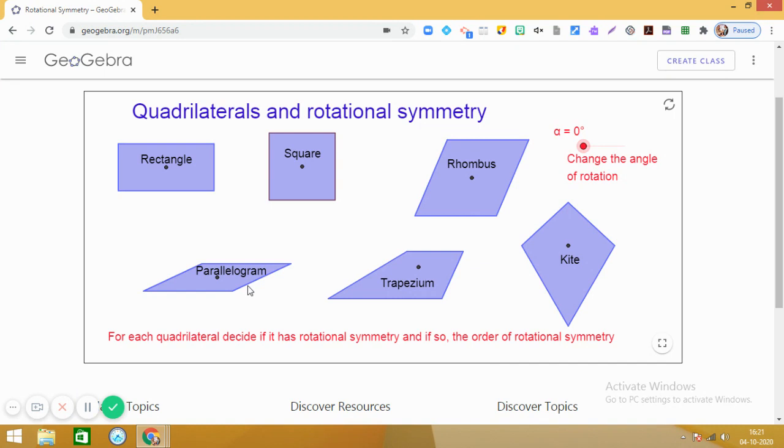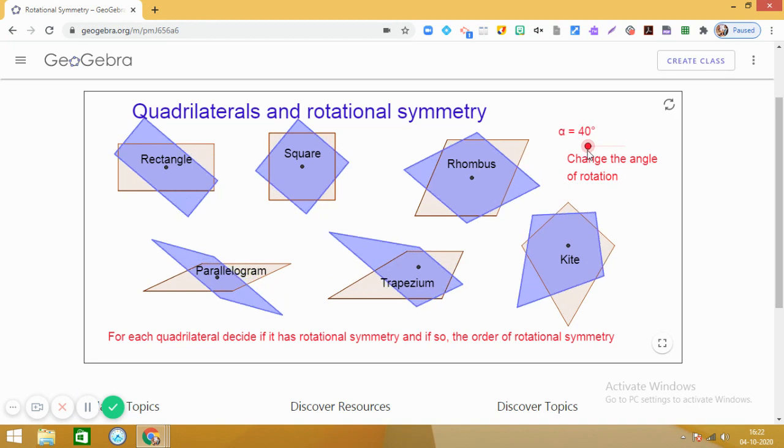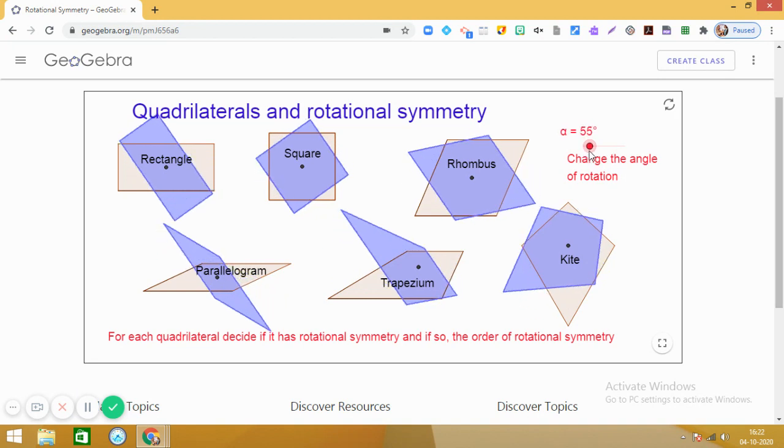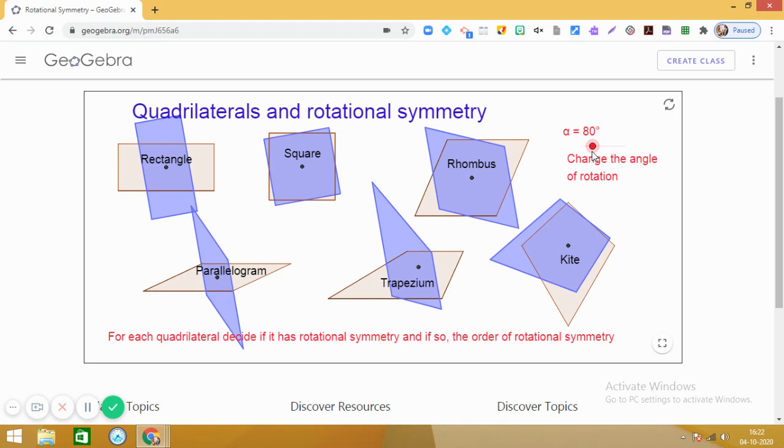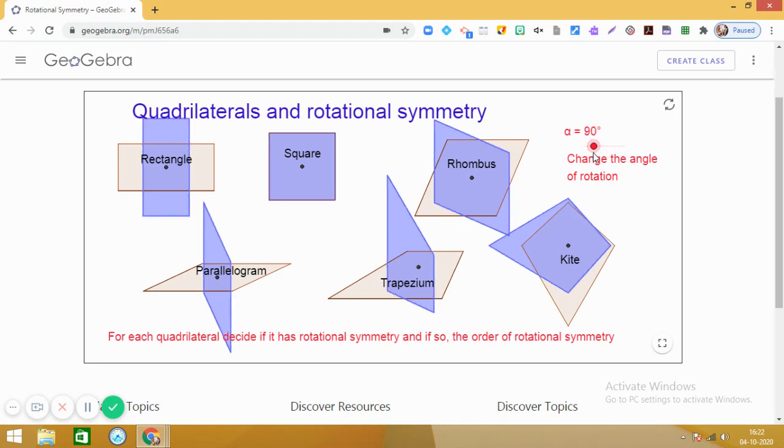And the angle of turn during the rotation is called the angle of rotation. So, you know that the full turn is 360 degrees, half turn is 180 degrees, and a quarter turn is 90 degrees. Now, let us see what happens if we rotate all these quadrilaterals at an angle of 90 degrees.